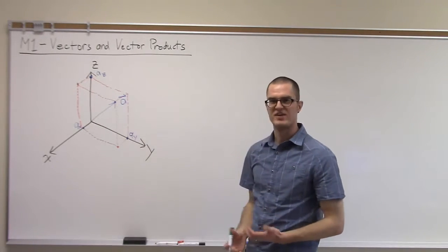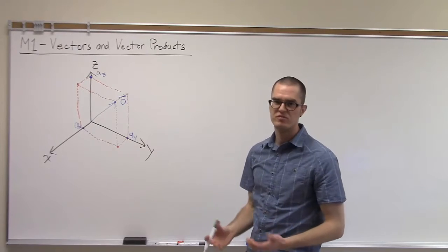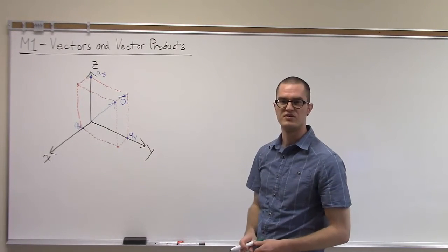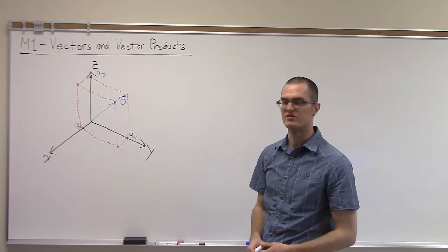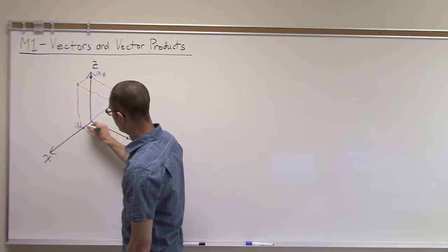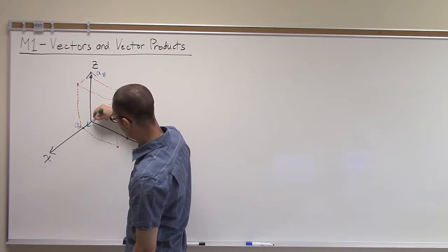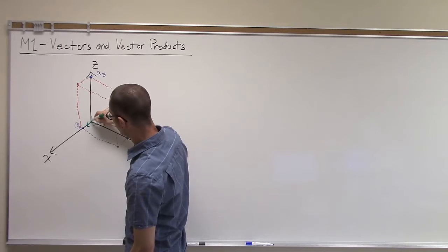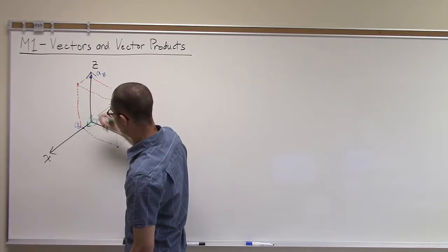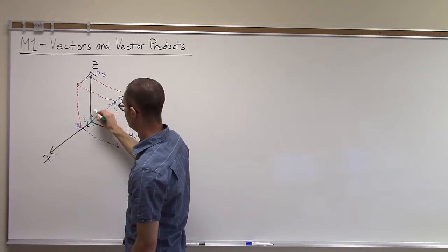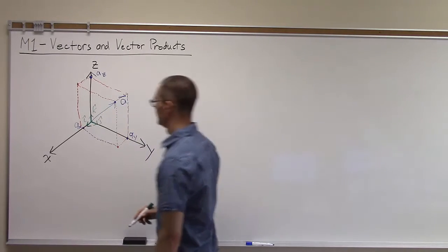To express that vector algebraically, there are a few different approaches. One way is using the unit vector approach, which is what we'll use through this section. If we imagine that parallel to each of the primary coordinate directions — x, y, and z — we have unit vectors, which we'll call i, j, and k.